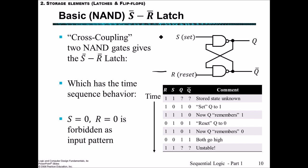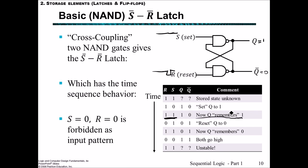Both reset and set start with a value of 1, where Q and Q0 is unknown, and then set changes from high to low. Now Q is set to 1 and Q inversion is set to 0. Once set changes back to 1, we have this memory condition again where Q remembers 1 — Q stays at 1 and Q inverted stays at 0, despite the fact that both set and reset are 1. Then if reset goes down to 0, Q is set to 0, Q inverted changes to 1, and now Q is remembering 0.